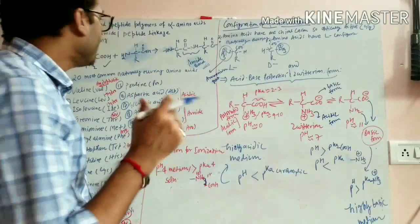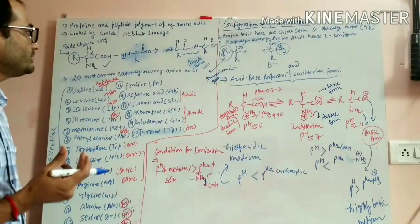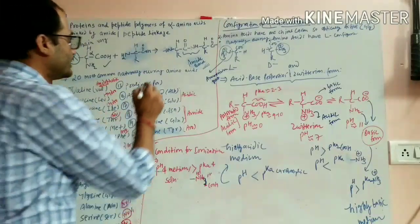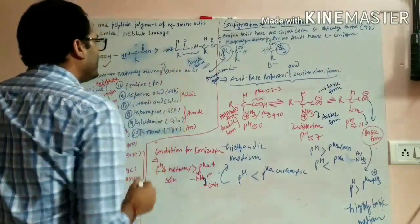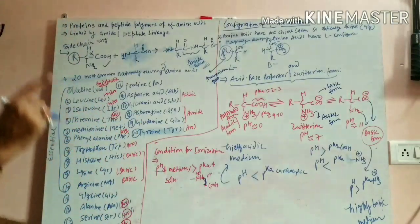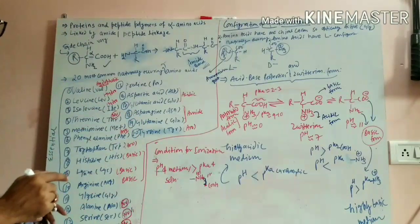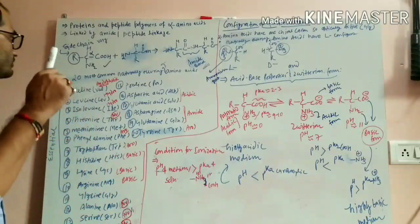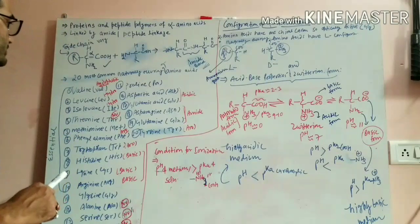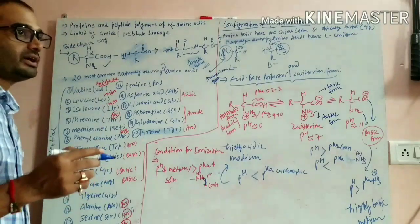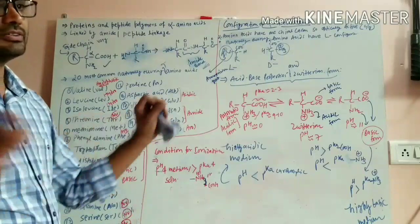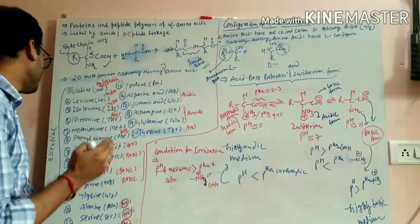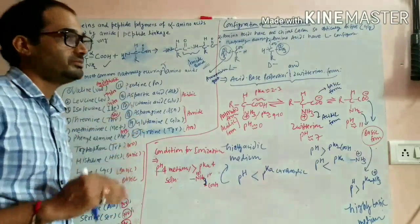In naturally occurring amino acids, there are 20 most common naturally occurring alpha amino acids which generally occur in nature. Out of these 20 amino acids, they are classified or categorized in various ways. One of these ways is that they are called essential amino acids and non-essential amino acids.